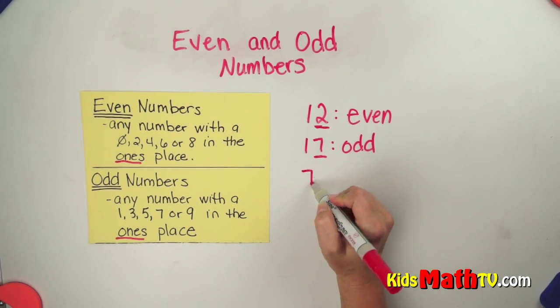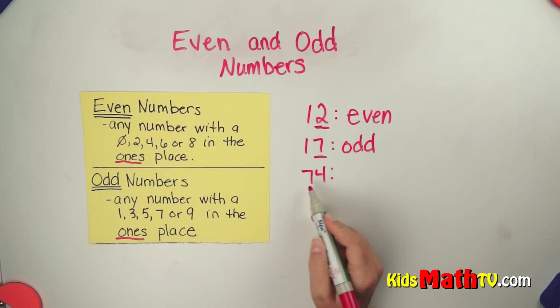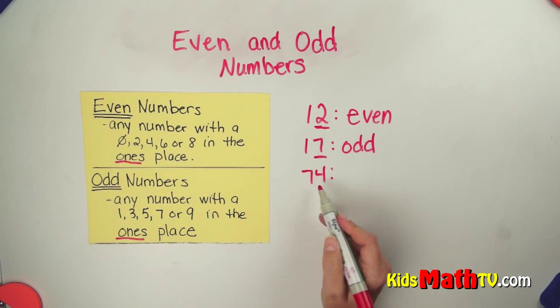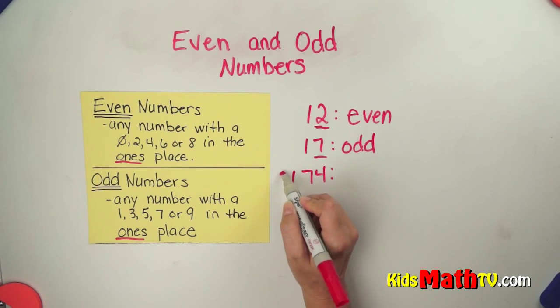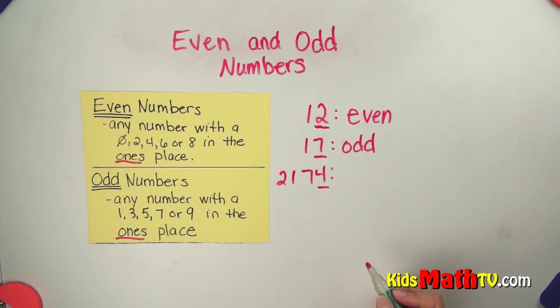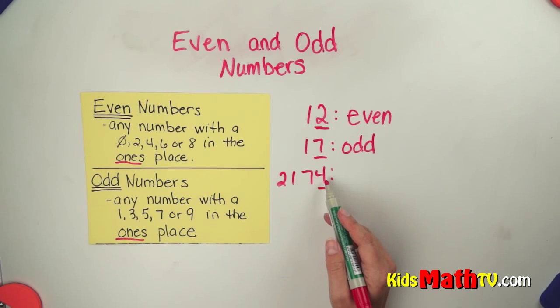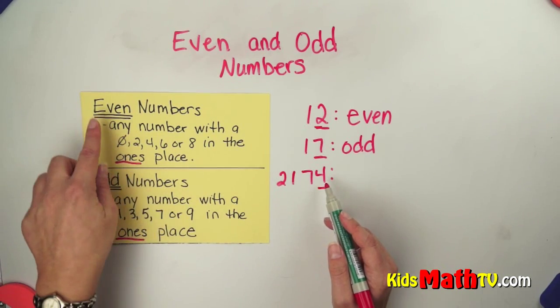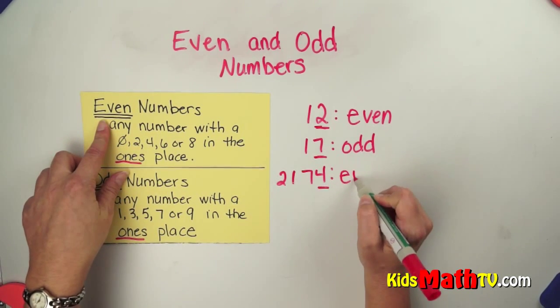How about the number 74? Again, not worried about the tens. I could have any numbers out here. I don't worry about anything except the ones place. So I look at the 4. The 4 is in this list here, so this is an even number.